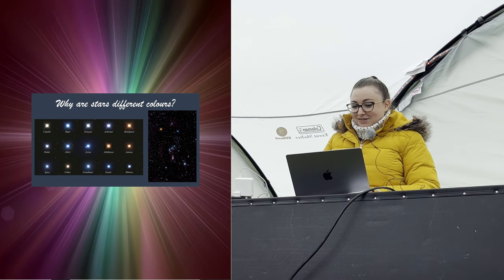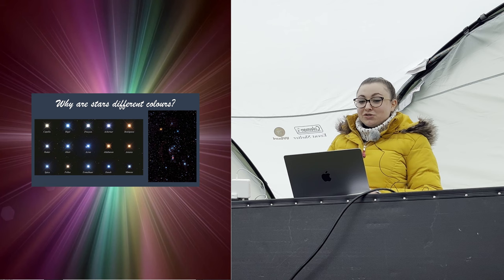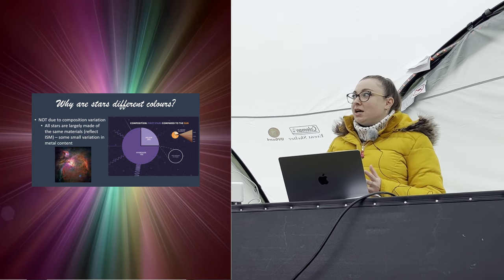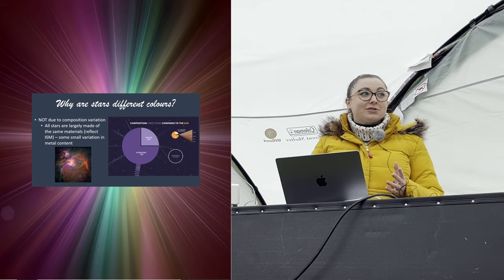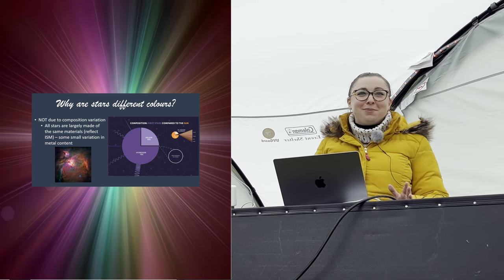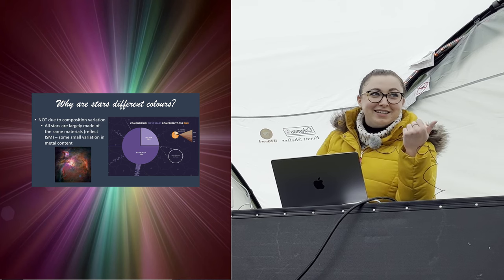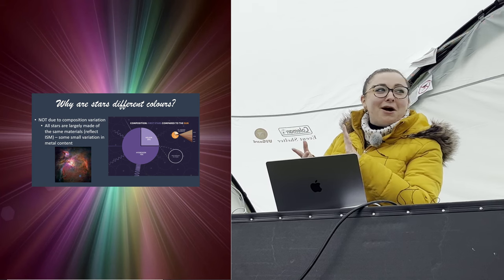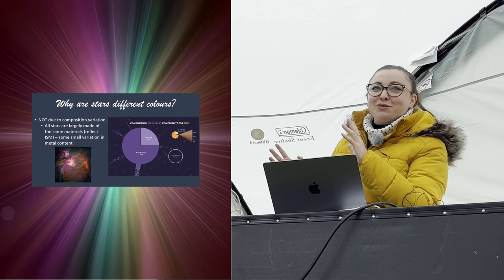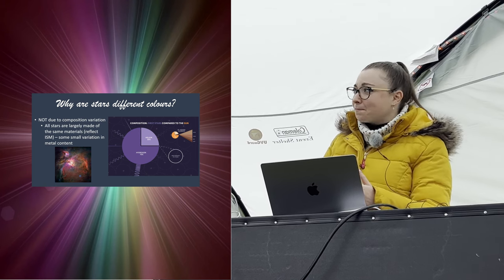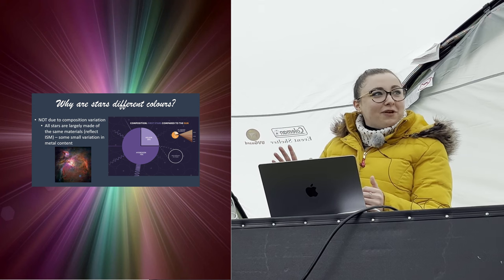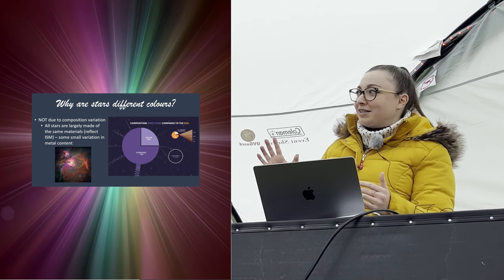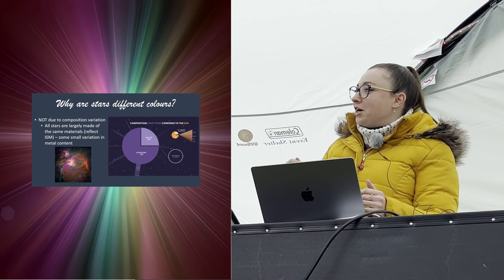Why are stars different colors? It's nothing to do with their composition because by and large all stars are made of exactly the same materials. There are very, very small variations with something called metals. Now in astronomy we have a very bland periodic table because we have hydrogen, helium, a little bit of lithium, and everything else is a metal. So magnesium, carbon, iron, absolutely everything else we classify as a metal.